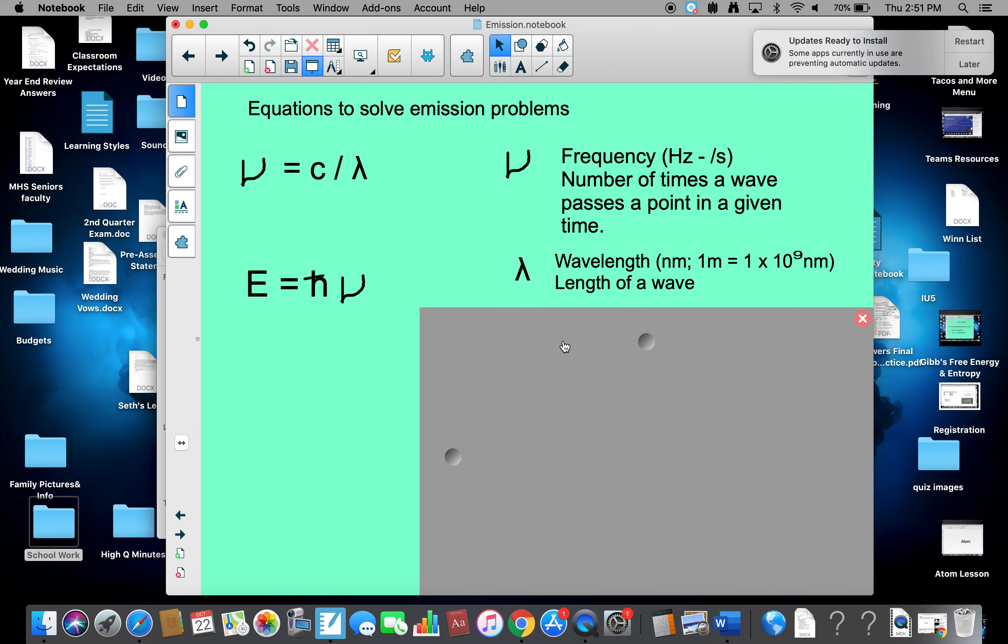The C, or upside down Y, rather, is called lambda. It's the wavelength, and it's expressed in nanometers. A meter is 1 times 10 to the ninth nanometers, and a wavelength is the length of a wave.